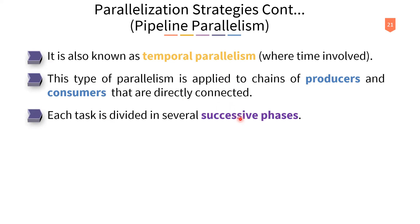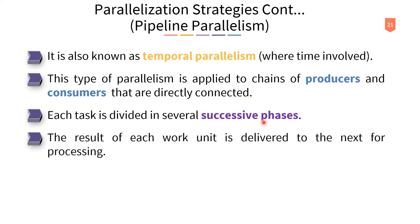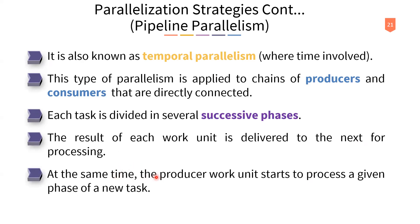Each task in pipeline parallelism is divided into several successive phases. The producer produces items, the consumer consumes them. The result of each work unit is delivered to the next stage for forward processing. At the same time, the producer work unit starts to process a given phase of a new task.